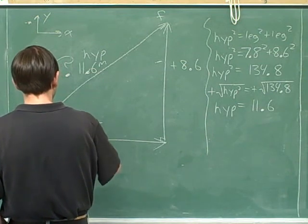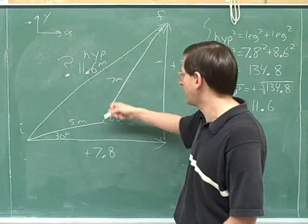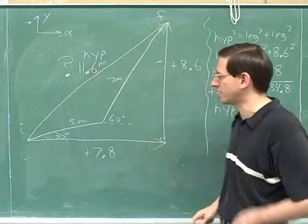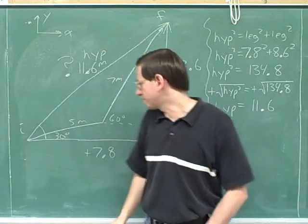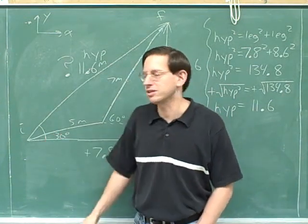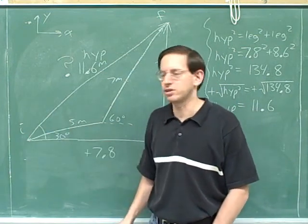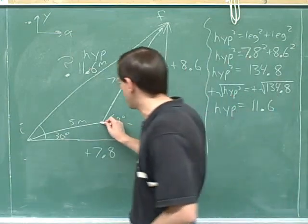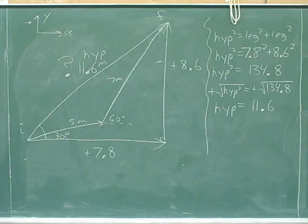First we went 30 degrees for five meters, and then we switched to a path that was seven meters long at an angle of 60 degrees. We ended up at the final point 11.6 meters from where we started, but what we haven't figured out is the angle — we haven't figured out what direction our overall displacement is from the initial position. It's certainly going to be bigger than 30 degrees and probably between 30 and 60. There isn't really any way to directly combine the 30 and the 60, just like there's no way to directly combine the five and the seven.